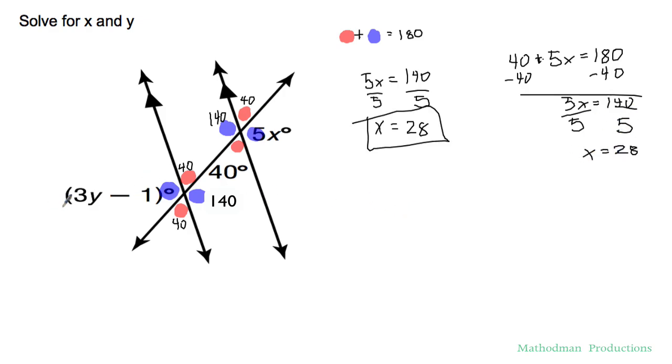Let's tackle y. You can do this two ways. You can set up 3y minus 1 plus 40 equals 180 or you can do the shortcut way. I know 3y minus 1 is the same value as 140. Set up that equation. From here it's a simple two-step equation. Just add one to both sides. You get 3y equals 141 and then divide both sides by 3. You've got your y value as 47.